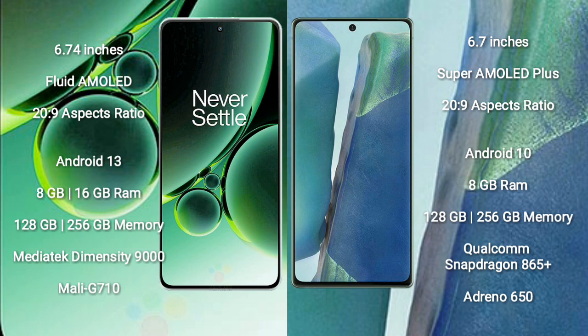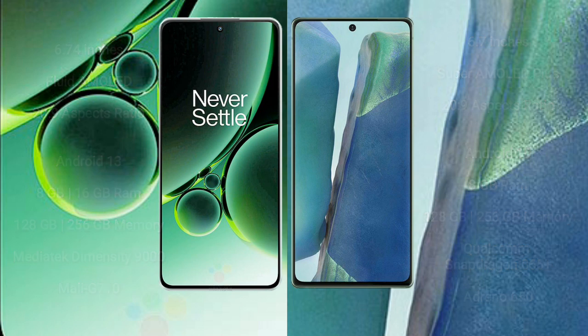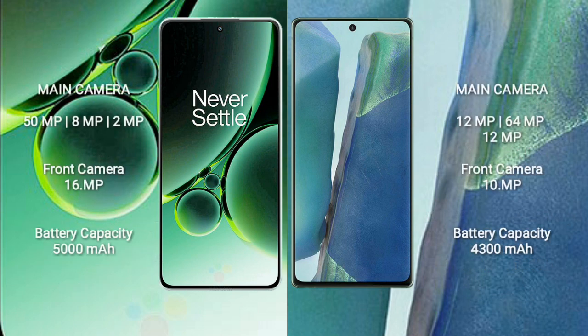OnePlus Nord 3 comes with 8GB or 16GB RAM and 128GB or 256GB internal storage, with a Mediatek Dimensity 9000 processor and GPU Mali G710. Samsung Galaxy Note 20 comes with 8GB RAM and 128GB or 256GB internal storage, with a Qualcomm Snapdragon 865 processor and GPU Adreno 650.